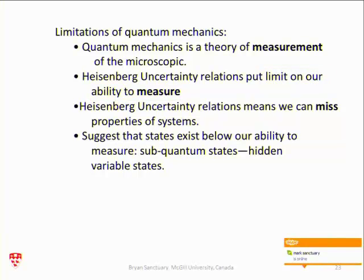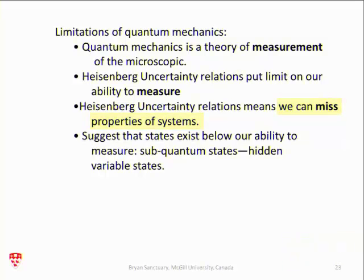There's something new that comes out of my work: the Heisenberg uncertainty principle hides stuff from us — stuff that exists in the absence of a probe but disappears when you put a probe on. I suggest that these states exist below our ability to measure. These are hidden variable states.